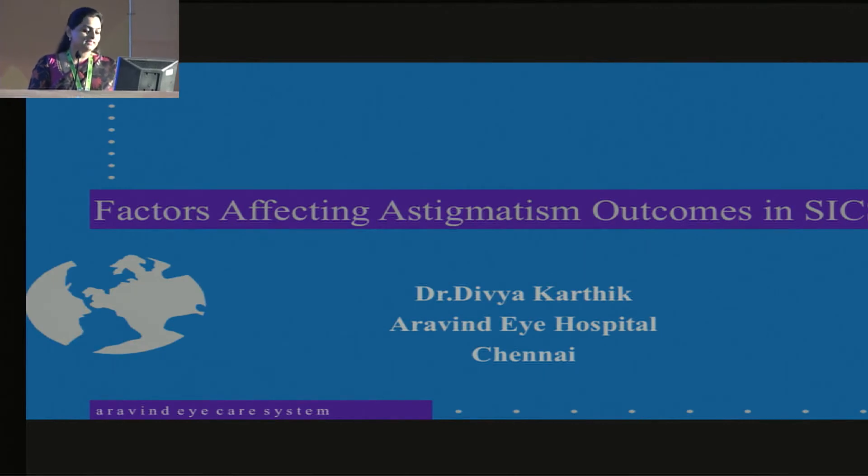And as SICS surgeons, what factors we need to consider. Actually, SICS, we can aim at giving 6-6. That is, we can take care of the pre-op astigmatism. What do we do? Why isn't it working?